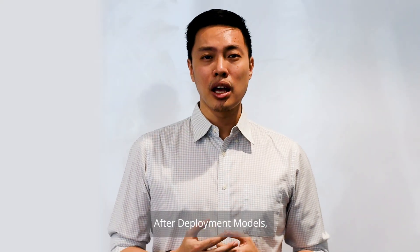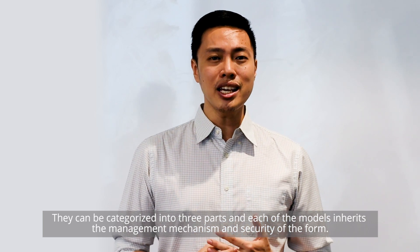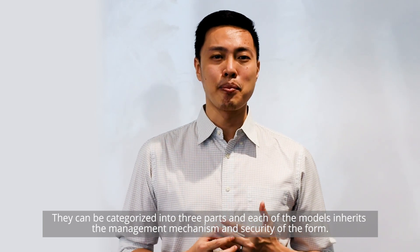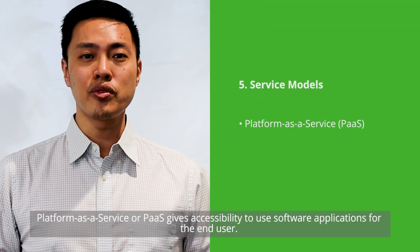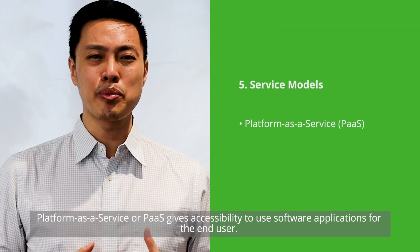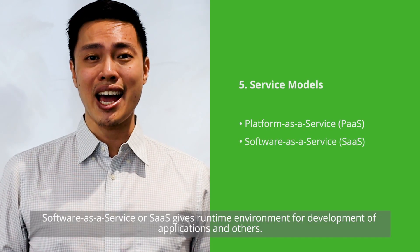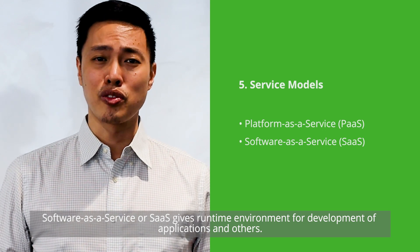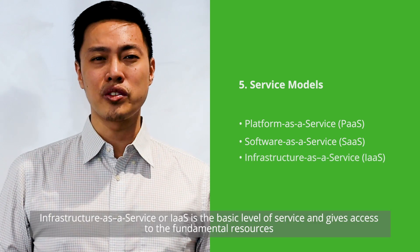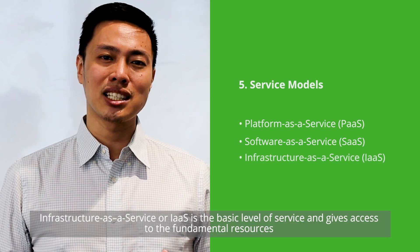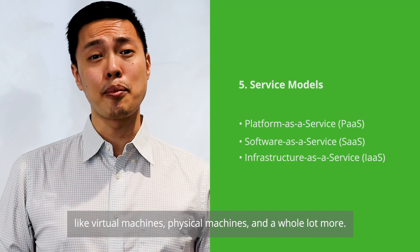After deployment models, let's go to the service models. They can be categorized into three parts, and each model inherits the management mechanism and security of the platform. Platform as a Service, or PaaS, gives accessibility to use software applications for the end user. Software as a Service, or SaaS, gives a runtime environment for development of applications. Infrastructure as a Service, or IaaS, is the basic level of services and gives access to fundamental resources like virtual machines, physical machines, and more.